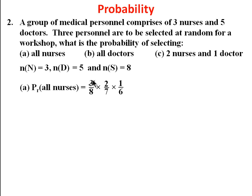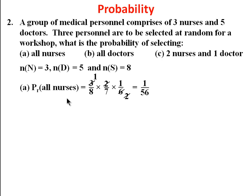Simplifying: 3 cancels into 6 giving 2, the 2s cancel, leaving 1 × 1 = 1 in the numerator and 8 × 7 = 56 in the denominator. So the probability of selecting all nurses is 1 over 56.